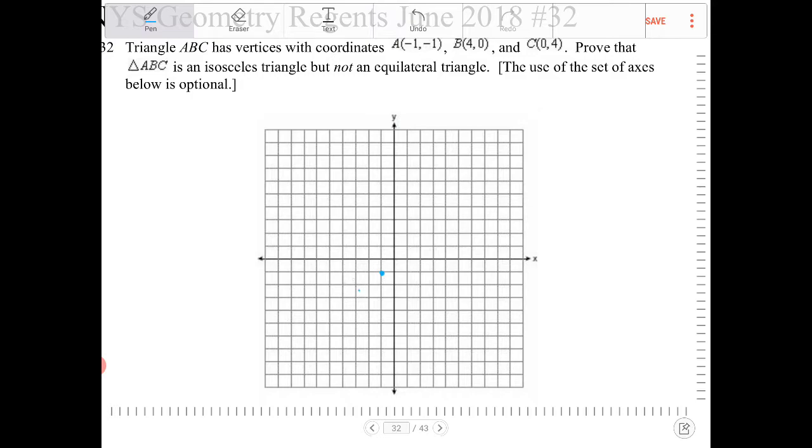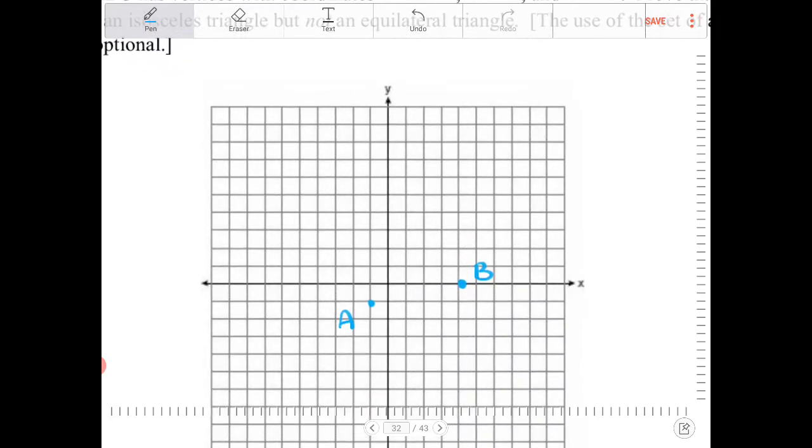So, A is (-1,-1), B is (4,0), so this is B, and C is (0,4). Whoops, no, that's (0,3). So, C is (0,4), okay.